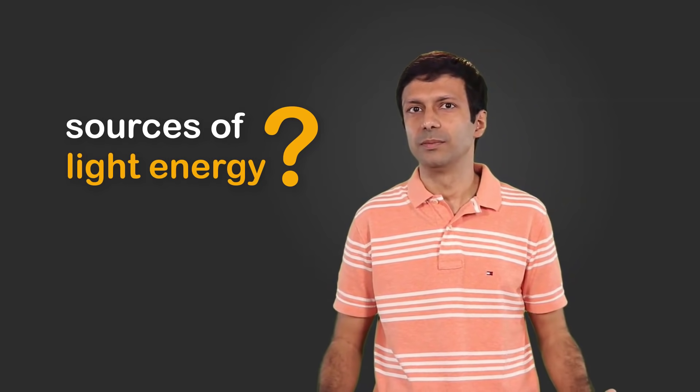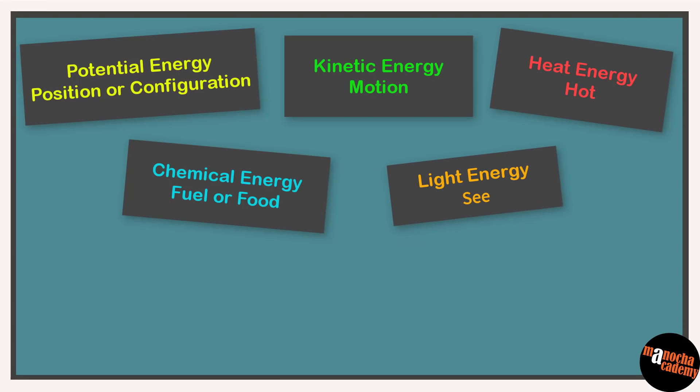Light energy — what are sources of light energy? The sun, bulbs, LED lights, candles — these all give out light energy. Light energy helps us to see the world around us. If there was no light, then our discussion would look something like this — we don't want that! Light energy helps us see.